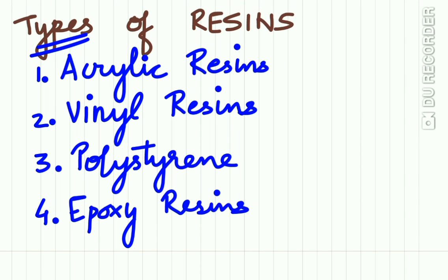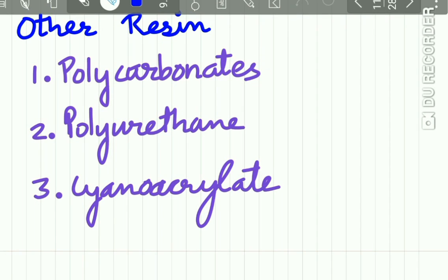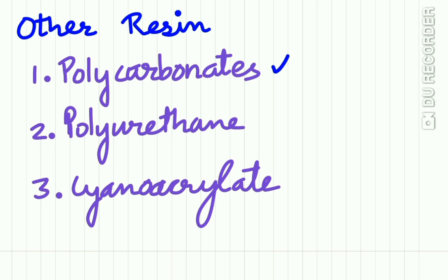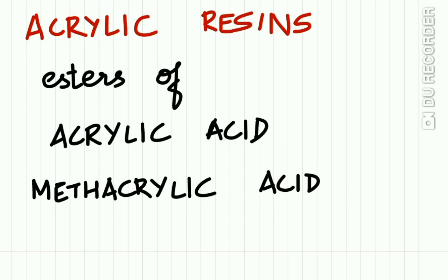Types of resins used in dentistry are acrylic resins, vinyl resins, polystyrene, and epoxy resins. Other resins such as polycarbonates, polyurethane, and cyanoacrylate are also used. The acrylic resins used in dentistry are esters of acrylic acid and methacrylic acid.